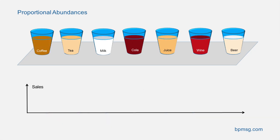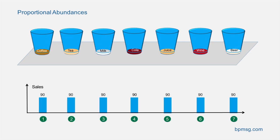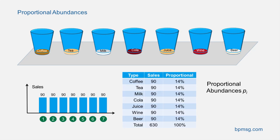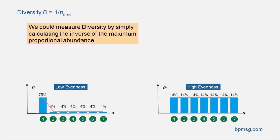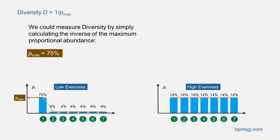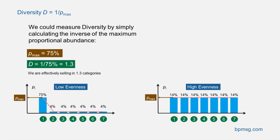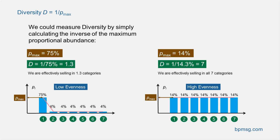What would be the more ideal case? We are selling 90 units from each type of drink, or measured in proportional abundances, 14% of each type, resulting in a high evenness — equal distribution across our categories. Taking the inverse of the maximum of the proportional abundance as a simple diversity measure: selling 75% coffee in the first case results in a diversity of 1.3, meaning we are effectively selling in 1.3 categories. Selling the same number of drinks in all categories, the maximum proportional abundance is 14%, resulting in a true diversity of 7, meaning we are effectively selling in all 7 categories.